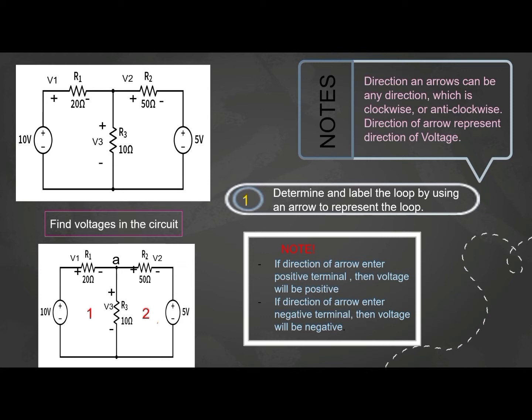Another thing that you must take note. If direction of error enter a positive terminal, then voltage will be positive. And if direction of error enter negative terminal, then voltage will be negative. Now, let's put the error. Archeal error.